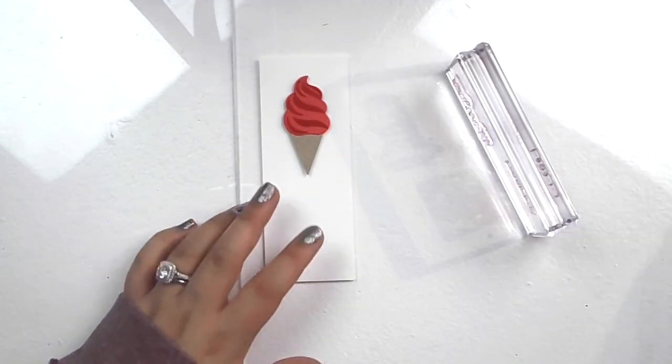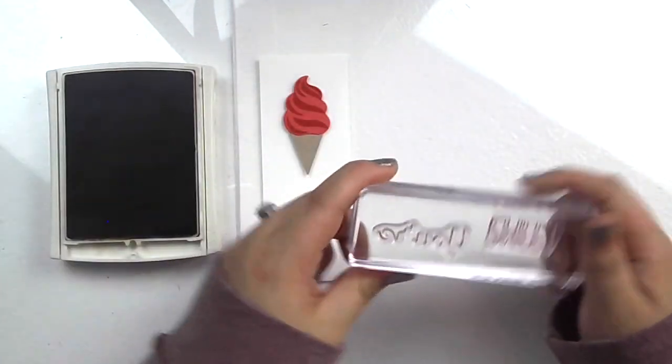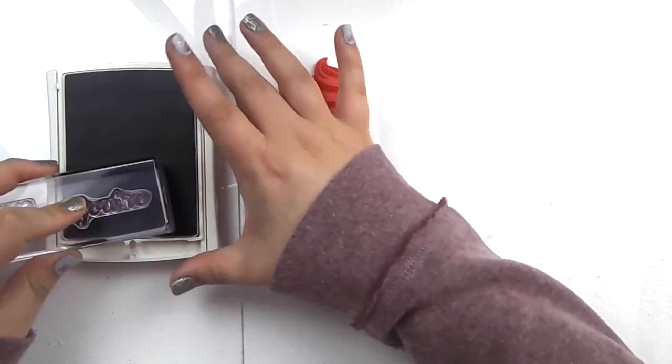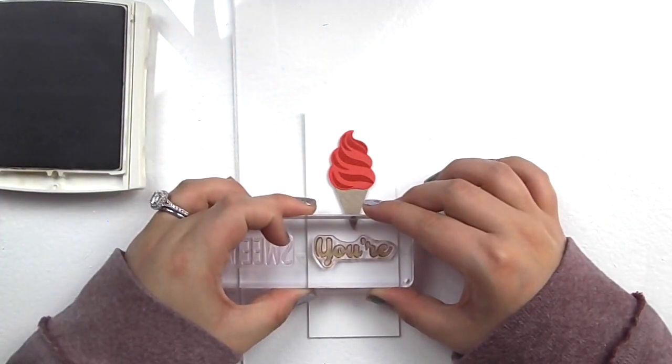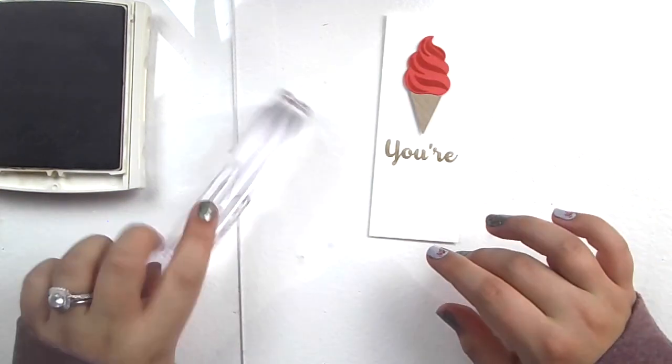Then we're going to do our sentiment. I'm going to bring in my crumb cake ink and there are two stamps in this set. One says your and the other says sweet. And I'm going to take the your stamp and I'm going to ink this up in crumb cake. And I'm going to stamp it right under our little ice cream just like so.